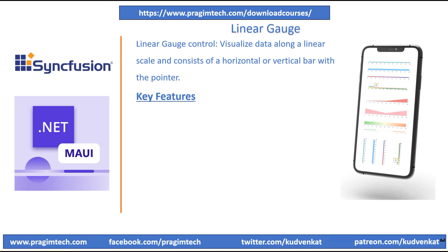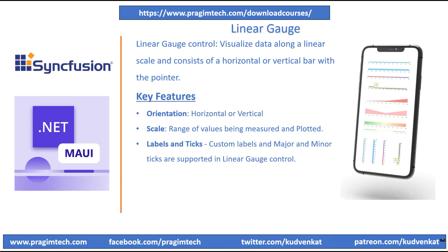Let's now understand the different key features of linear gauge control. Linear gauges can be oriented horizontally or vertically based on design and space requirements. The linear gauge includes a scale representing the range of values being measured. This scale is customizable, allowing users to set minimum and maximum values as well as interval markings. Scale elements such as labels, major ticks and minor ticks can be customized to different styles. The pointer is a visual element that moves along the scale to indicate the current value. The linear gauge has three types of pointers: shape marker pointer, content marker pointer, and bar pointer.